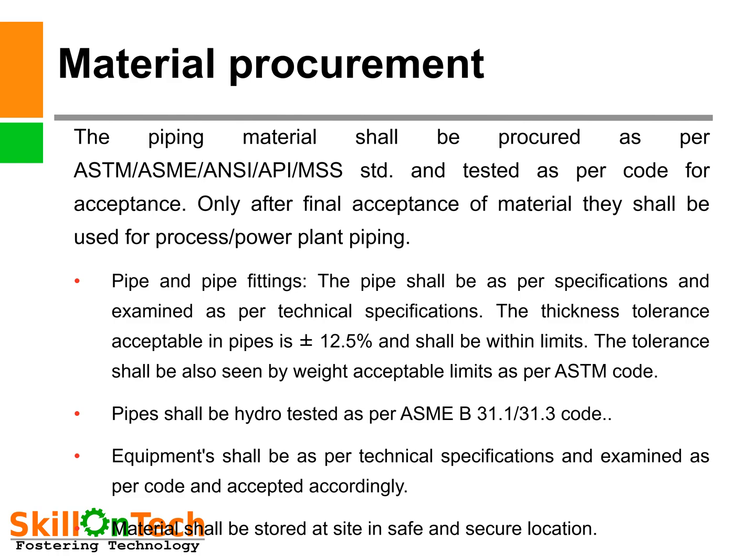Pipe and pipe fittings. The pipe shall be as per specifications and examined as per technical specifications. The thickness tolerance acceptable in pipes is plus or minus 12.5% and shall be within limits. The tolerance shall also be seen by weight acceptable limits as per ASTM codes. Pipe shall be hydro tested as per ASME B31.1 and B31.3 code prior to acceptance. Equipment shall be examined as per code and accepted accordingly. Material shall be stored at site in safe and secure locations.